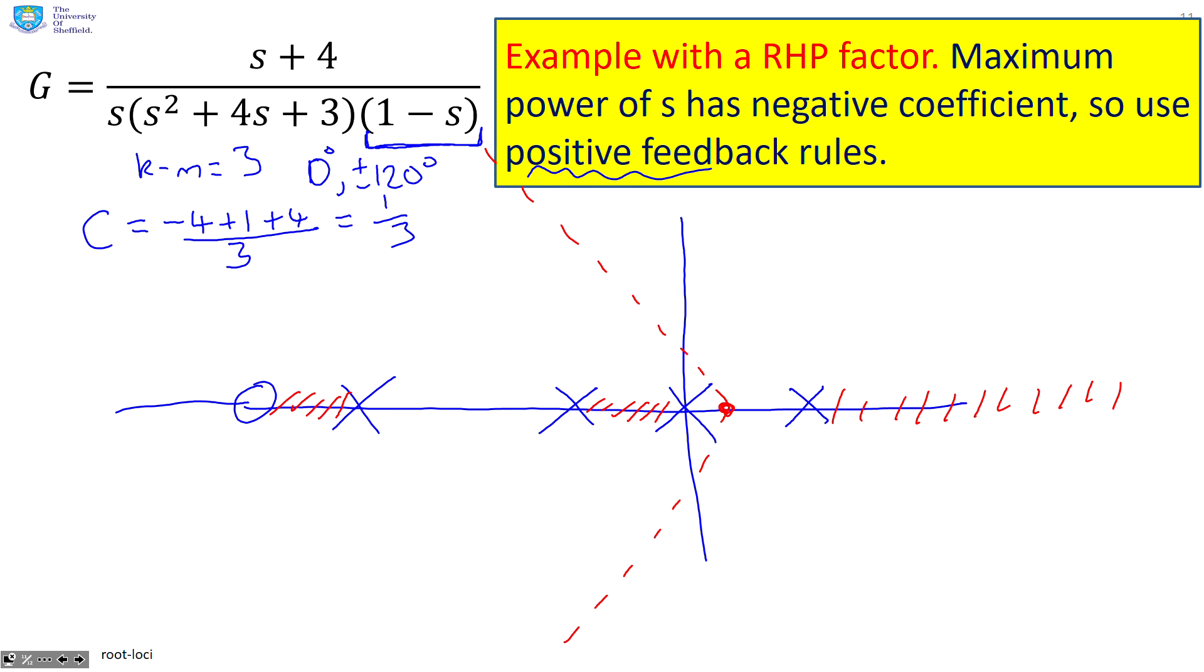So what you can see is going to happen is this pole is moving to this zero. This pole is moving to plus infinity. And these two poles are going to come together and then they're going to go off to these asymptotes here.